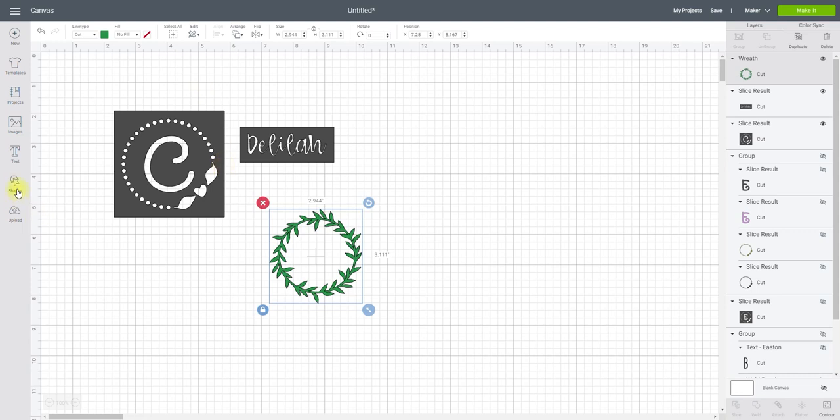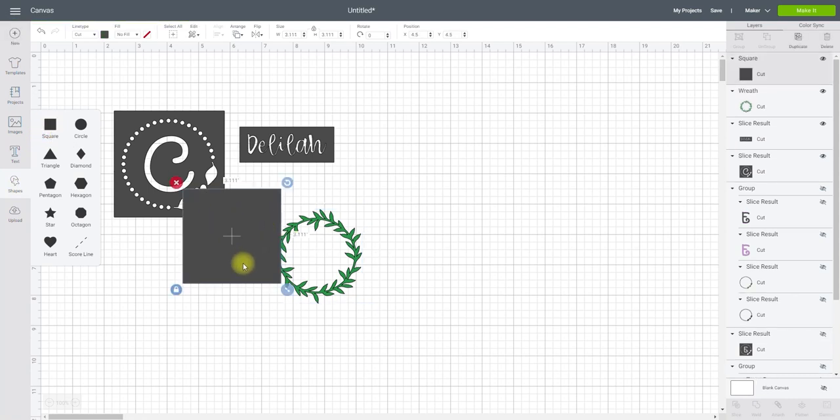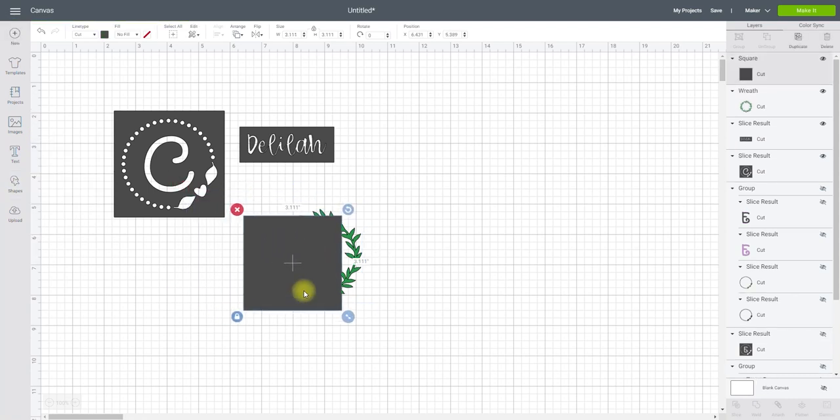So square or a rectangle, just grab a square and you need to make sure that this is larger than your image or your text and it's also going to fit on your item because you're going to use this as a buffer area.